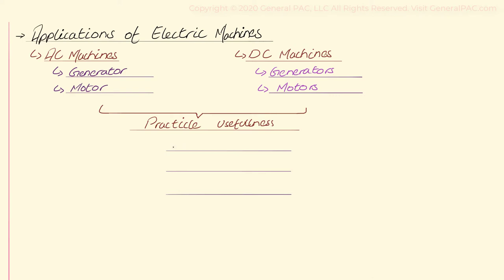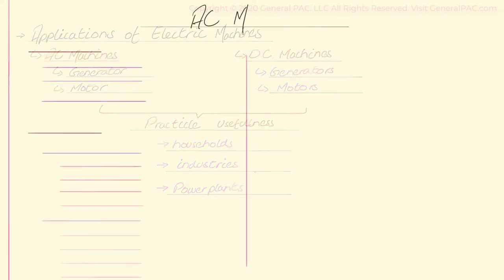The answer is basically everywhere — from households to industries and power plants of all sizes. Electric machines are a critical part of our lives, without which many of our tasks would be impossible. We've had previous discussions covering two types of electrical machines, AC and DC, so now let's look at the practical applications of AC machines first.